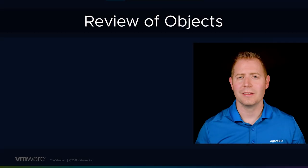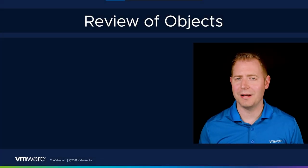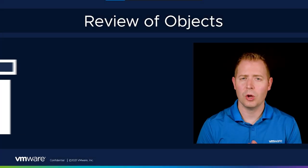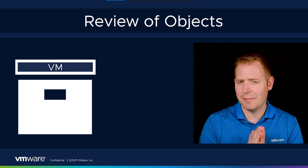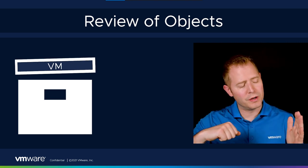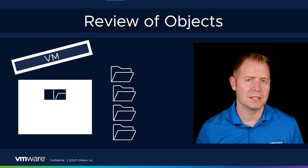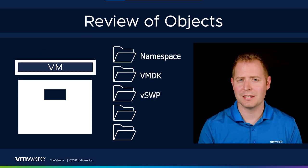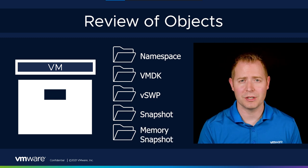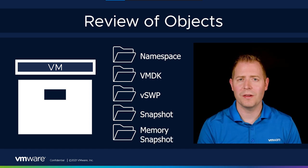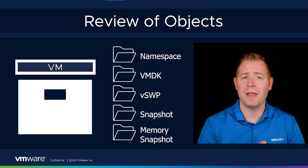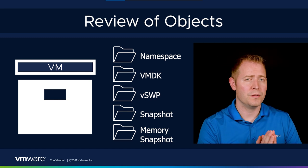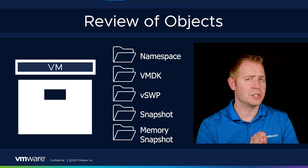So for this video, I'll just say RAID 0 FTT of 0. Let's use our file cabinet analogy from our objects video, where each VM is like a mini file cabinet. Once we open it up, we've got those five objects inside: our namespace, our VMDK, our swap space, our snapshot, and our memory snapshot. But we have to start putting some data in there, and that's where components come into play — we've got one component per each object.